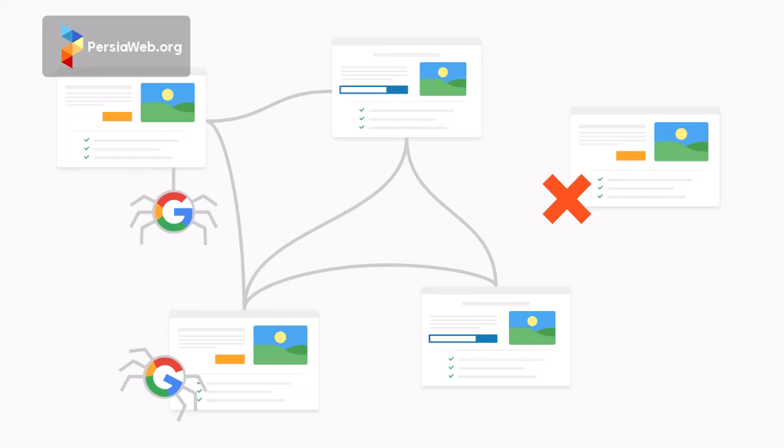To identify orphan pages on your site, first use tools like Screaming Frog to find a list of indexable pages and record them in Excel. Then utilize Google Analytics to find a list of pages that receive visits and export them. Compare these two lists to find pages with minimal or zero visibility.